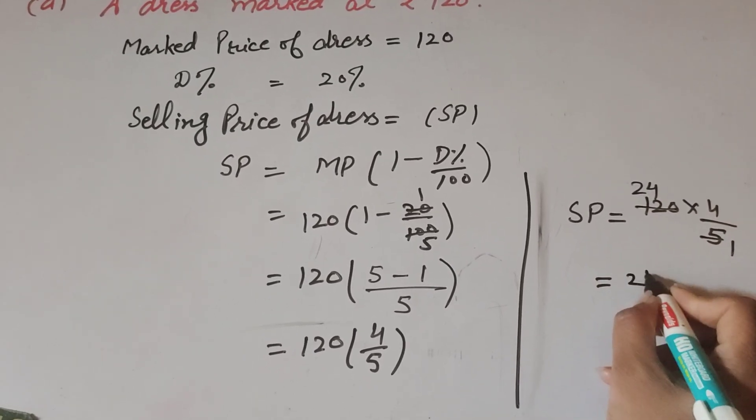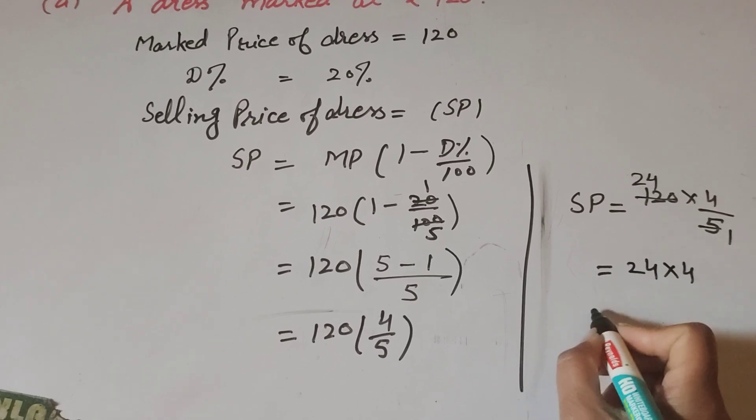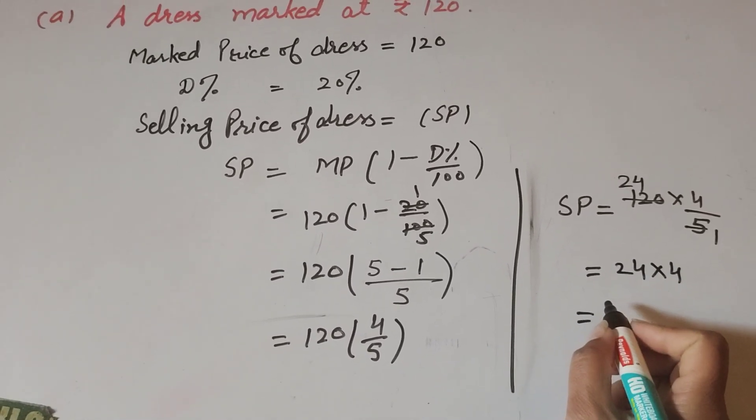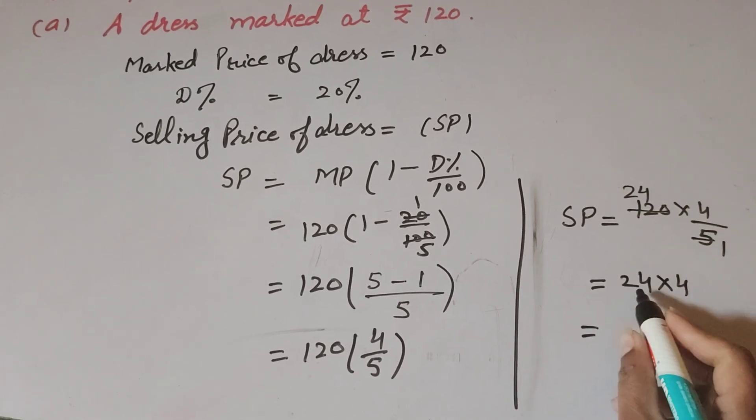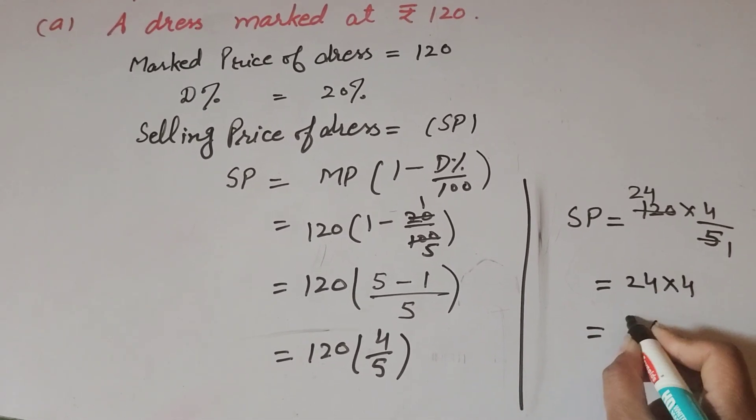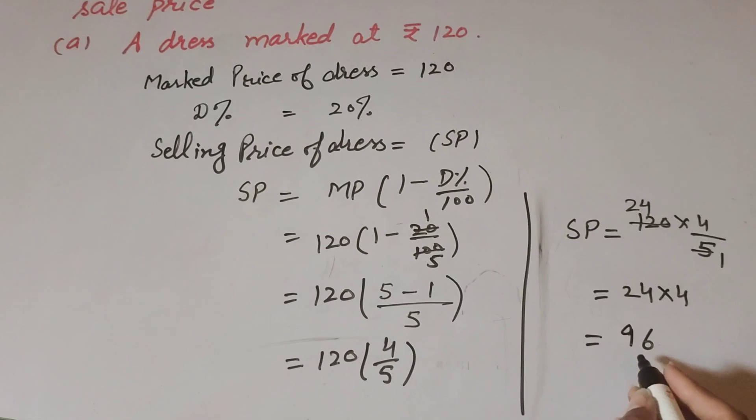So 24 multiply by 4, it is equal to 96. So the selling price of the dress is equal to Rs 96.